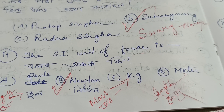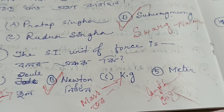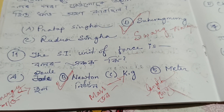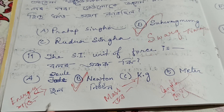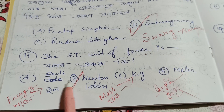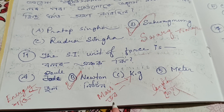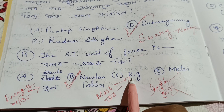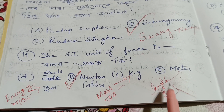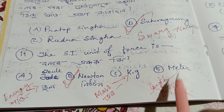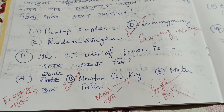Most importantly, energy is Joule. Mass is measured in KG and length is measured in meters — these are the key SI units to remember.